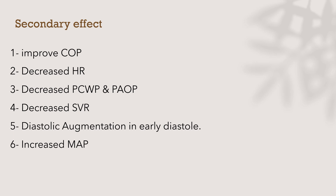As a result, ejection fraction increases and left ventricular wall tension decreases. The secondary effects include improving cardiac output, decreasing heart rate, decreasing pulmonary capillary wedge pressure and pulmonary artery occlusion pressure, decreased systemic vascular resistance, and diastolic augmentation in early diastole — all increasing perfusion to the coronaries and periphery, raising mean arterial blood pressure, which is the mean perfusing pressure in the body.